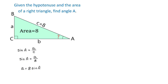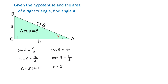Now, also by definition, cosine of angle A equals the adjacent side B divided by the hypotenuse. So we write that cosine of angle A equals B over C. Then we replace C with 8 and have cosine of A equals B over 8. Solving for B, we get B equals 8 cosine of A.